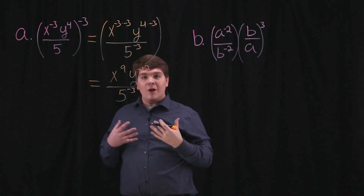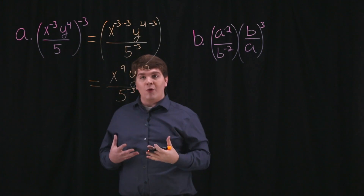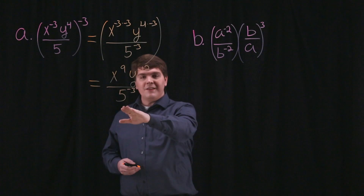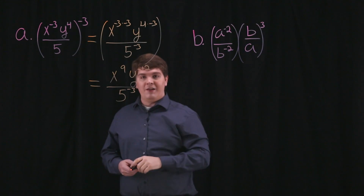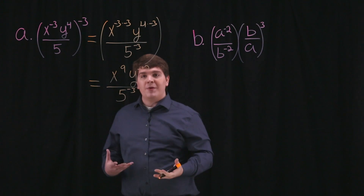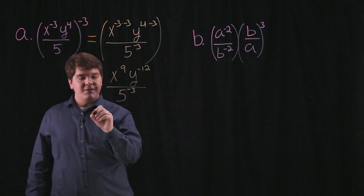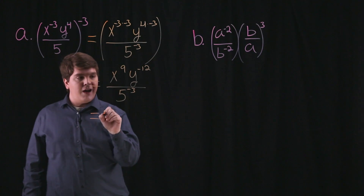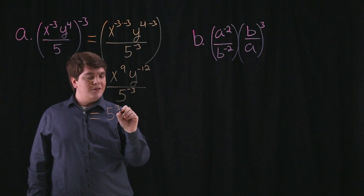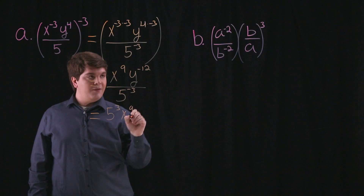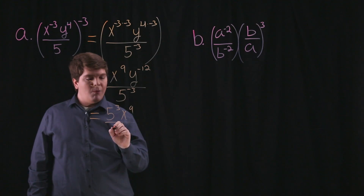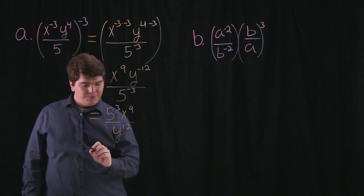We only have two more negative exponents: this y to the negative 12th and this 5 to the negative 3. We'll use our properties of exponents and rewrite this as 5 cubed times x to the 9th divided by y to the 12th.